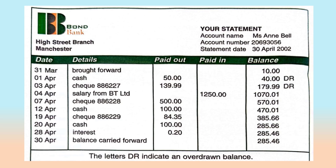In front of you is a bank statement. The letter here indicates that the account is overdrawn. The statement has columns for date, details, paid out, paid in, and account balance. Looking at the entries, you'll find: balance brought forward, cash, check, salary, cash, check, cash, interest, and balance carried forward. This is an example of how a bank statement is organized.